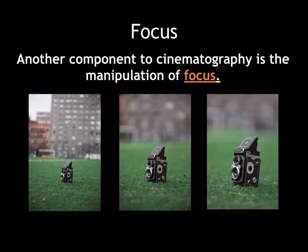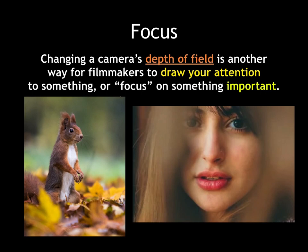Another component of cinematography is the manipulation of the camera's focus. The focal plane of a camera lens can be adjusted by the cinematographer to mimic the visual components of the human eye. In these three images, the subject matter is exactly the same but the background is visualized differently in all three. We change the camera's depth of field to draw attention to certain things in focus and throw things that are not important out of focus. It is okay for elements to be out of focus as long as the thing we want to look at is sharply in focus.